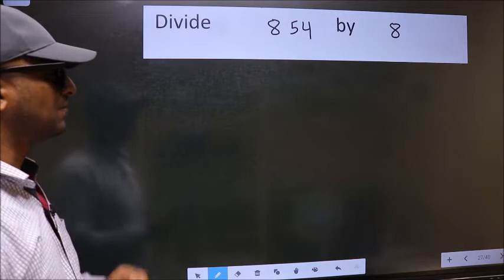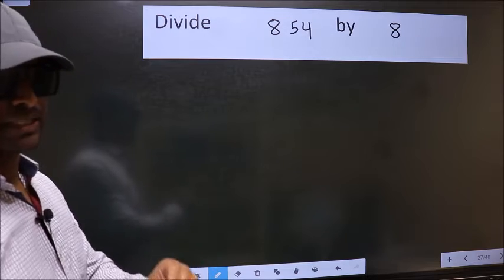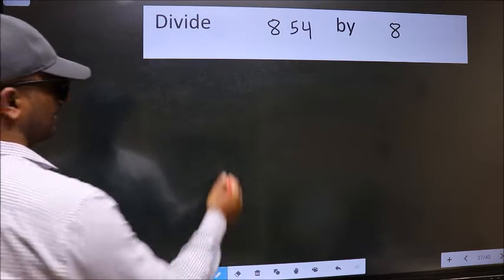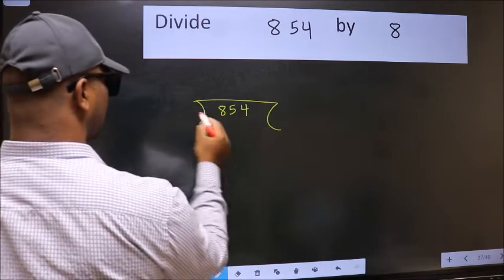Divide 854 by 8. To do this division, we should frame it in this way. 854 here and 8 here.